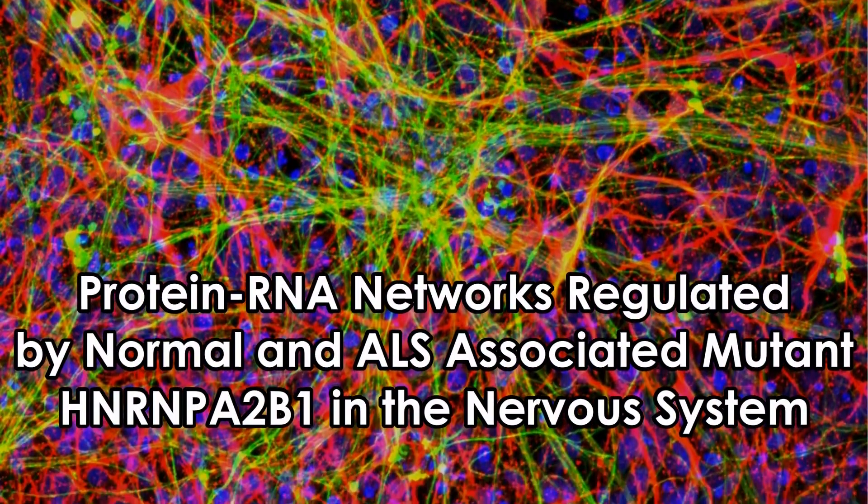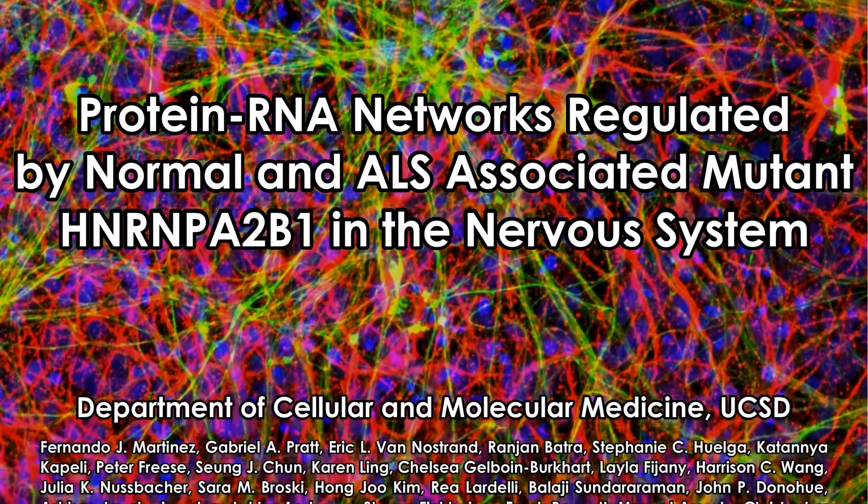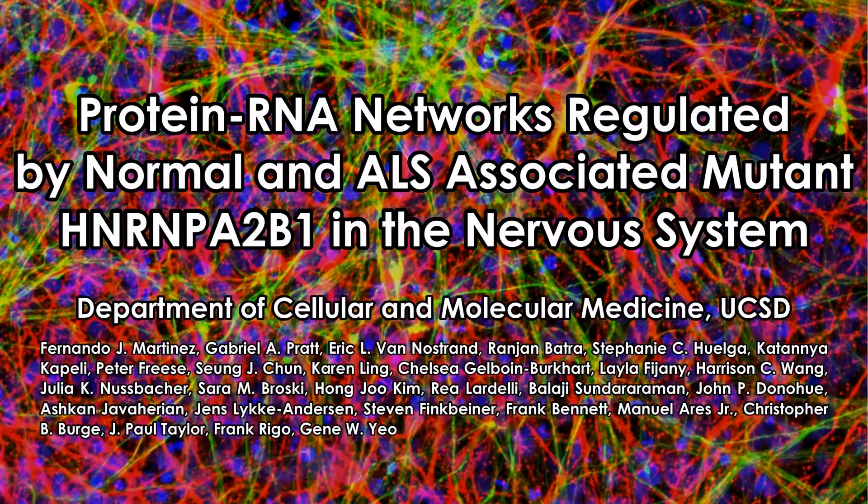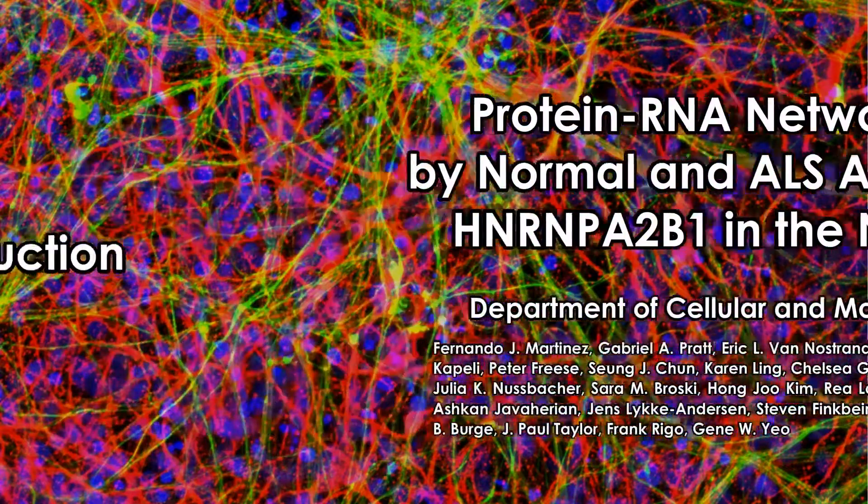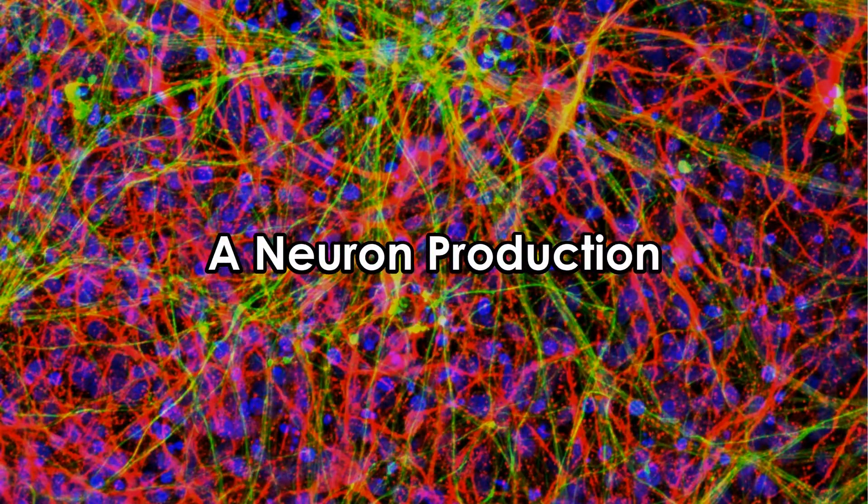Protein RNA networks regulated by normal and ALS-associated mutant HNRNP A2B1 in the nervous system, a neuron production. From the moment it's made, the RNA in our cells is covered in proteins.